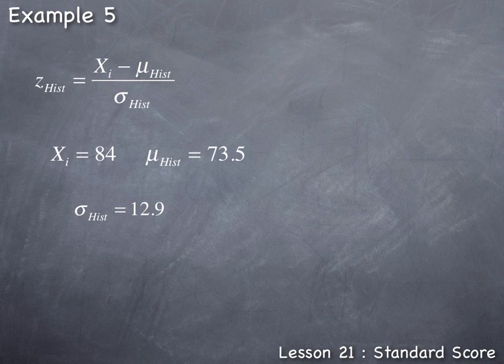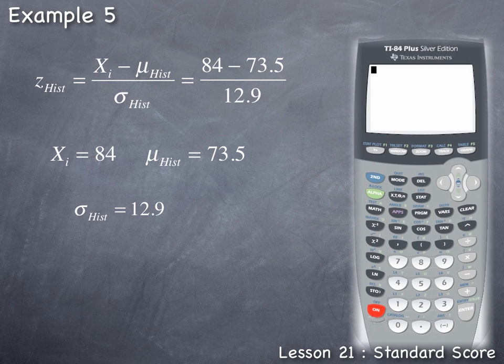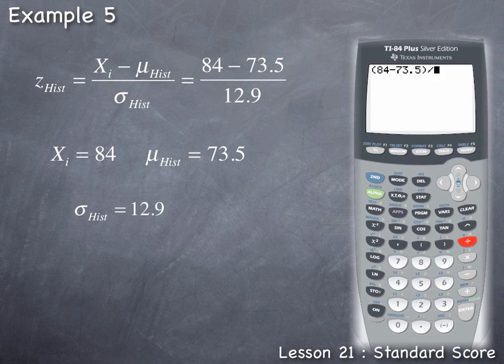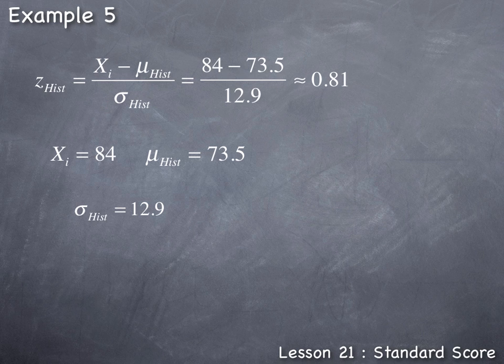Each of these values can be input into the standard score formula. To calculate the standard score for this student's history exam, we calculate left parenthesis 84 subtract 73.5 right parenthesis divide by 12.9. Since we need to carry two places after the decimal in our final result for standard scores, we look at the third place after the decimal, which is a 3. Since 3 is under halfway, this result rounds down to 0.81, meaning that this student's standard score on the history exam was 0.81 standard deviations above the mean score compared to all the other students who took that exam.